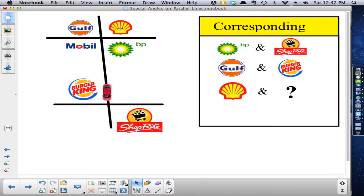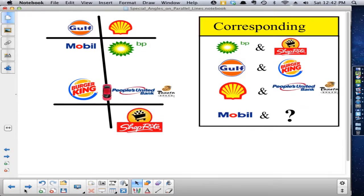What corresponds to Shell? What corresponds with Shell at the same relative position? So, the upper right-hand corner of this intersection of Four Corners. And what corresponds to Shell in this upper right-hand corner at this intersection? That would be the People's United Bank and the Panera. So, like I said, you'll pass Panera on the left. This corresponds with Shell. Burger King corresponds with Golf. BP, or whatever it is now, corresponds with ShopRite.